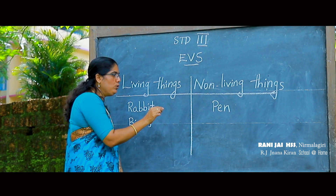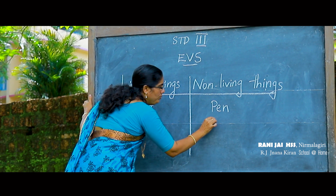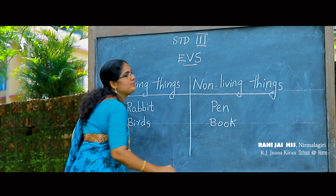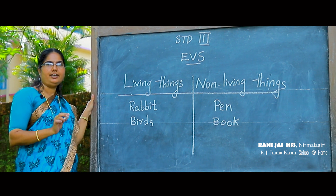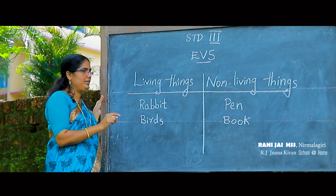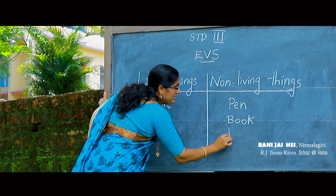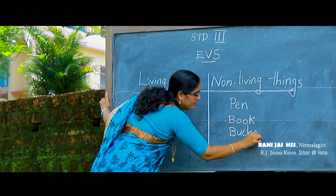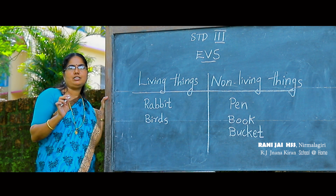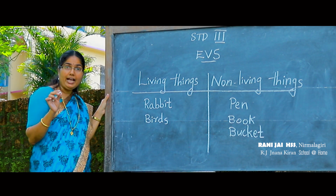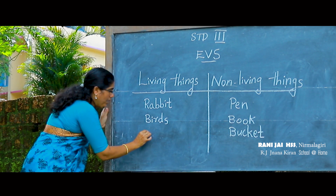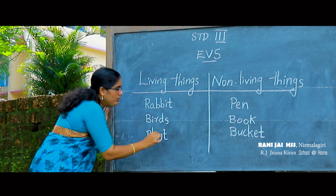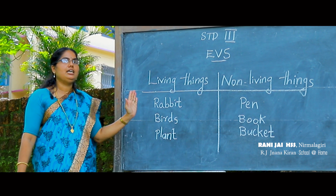Next — book. Very good. Book is a non-living thing. Next — bucket. Bucket is a non-living thing. Next — plant. Very good. Plant is included in the living things.